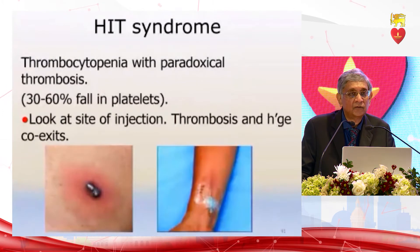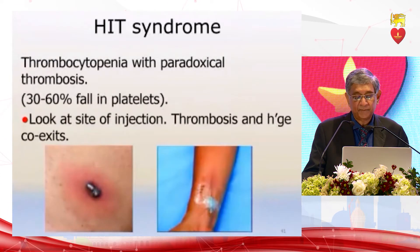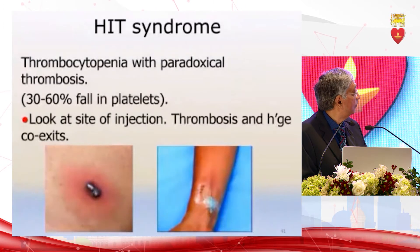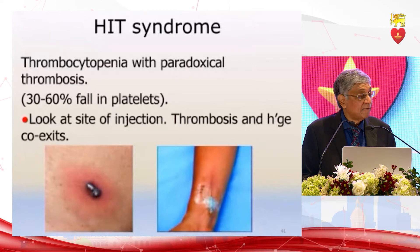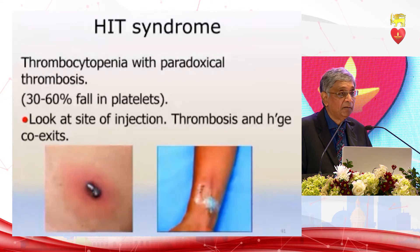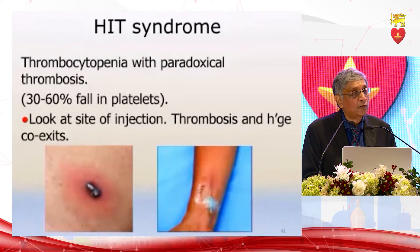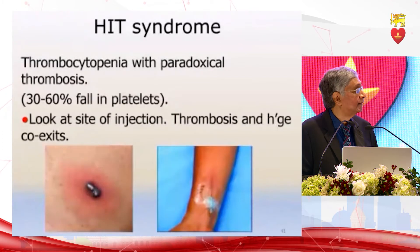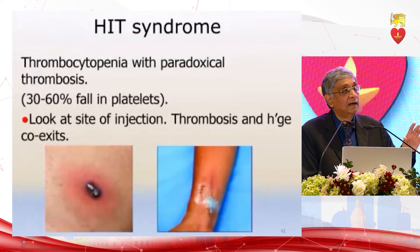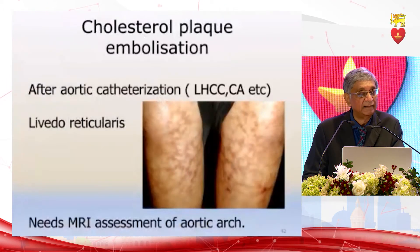The HIT syndrome — heparin-induced thrombocytopenia: heparin can cause a 30 to 60 percent fall in platelets even though it causes bleeding sometimes. Despite the thrombocytopenia, there is paradoxical thrombosis. Therefore when you look at the site of the heparin injection, you see both thrombosis and hemorrhage, and if you see that combination, that is one of the first physical signs you see in HIT syndrome. With low molecular weight heparin, HIT is less common but can still occur, so it is reported with both forms of heparin.